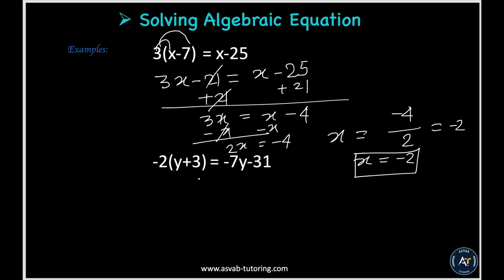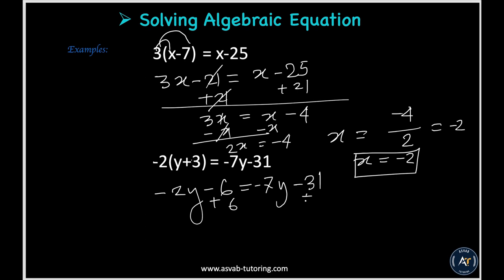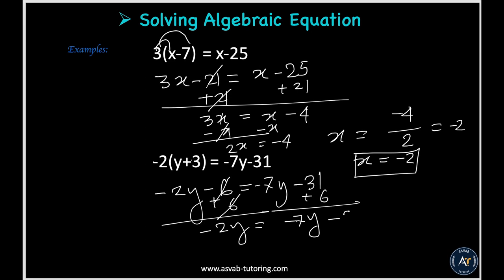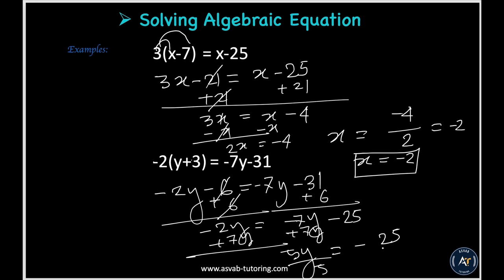Let's solve another one similarly. Negative 2y times negative gives positive, but here it becomes negative 6, equal to 7y minus 31. Add both sides by 6 — they cancel — leaving negative 2y equal to 7y minus 25. Add both sides by 7y: 5y equals negative 25. Divide both sides by 5, and y equals negative 5.